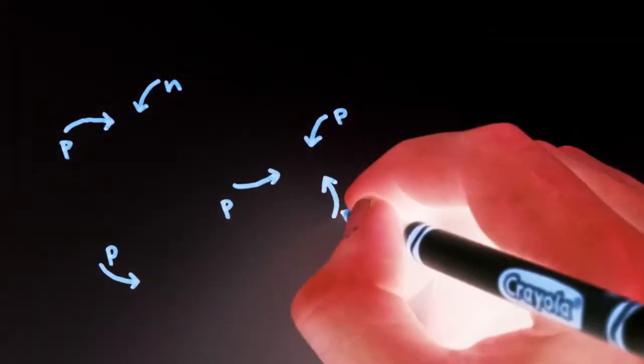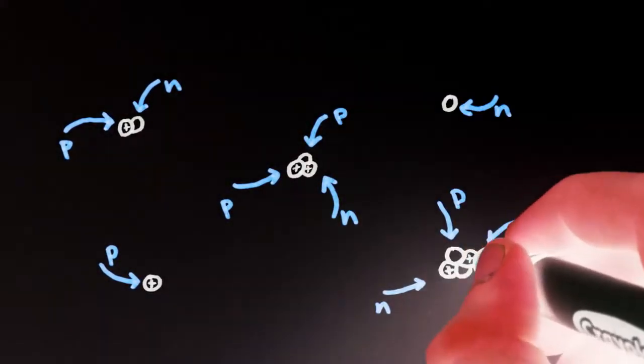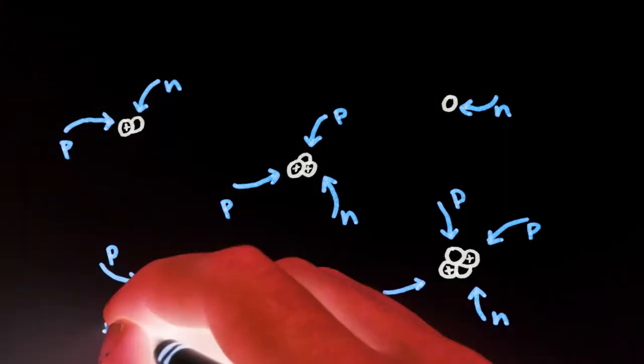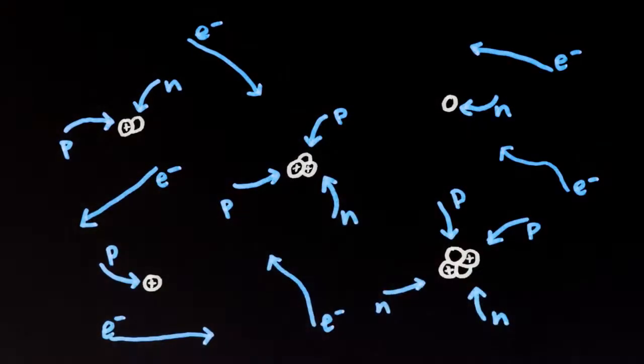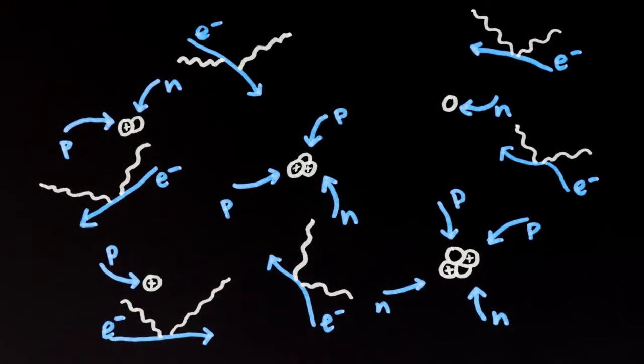Over a roughly three-minute period, protons and neutrons assembled from the annihilations to become the simplest atomic nuclei. Meanwhile, free-roving electrons thoroughly scattered the photons to and fro, creating an opaque soup of matter and energy.